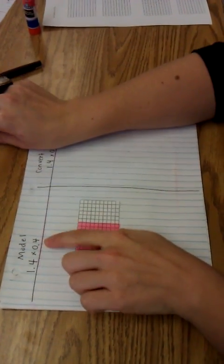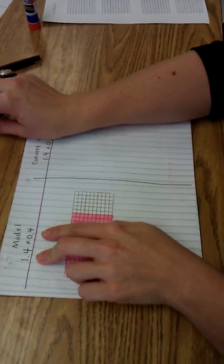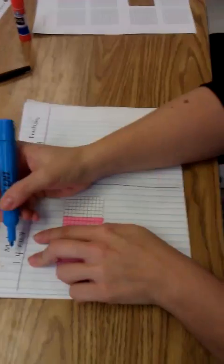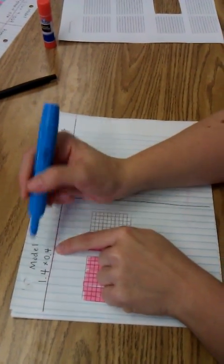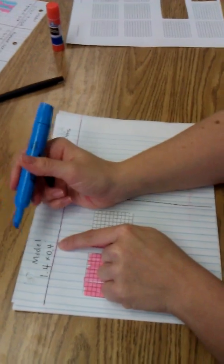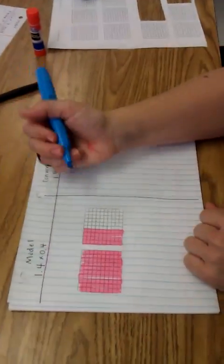When we're multiplying a decimal times a decimal, we can't use the same strategy we used as a decimal times a whole number, where we're doing repeated addition, because we can't do four tenths one and one fourth times. Without doing traditional, we can't do it that way. So with a model...